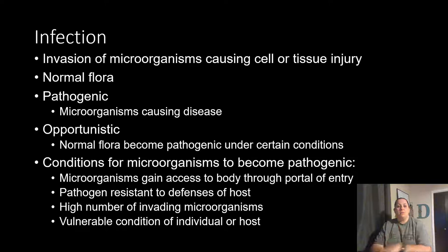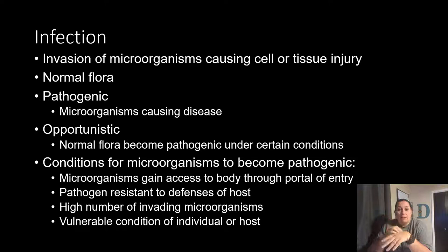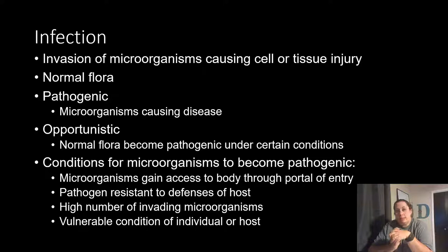You do have normal flora — normal bacteria on your skin and in your body — and this actually helps protect you as long as it stays where it's located. If it gains access into your body through a cut, for example, it can cause opportunistic infections. An opportunistic issue is when normal flora becomes pathogenic during certain conditions. Pathogenic means it's a microorganism that causes disease; we call these pathogens.